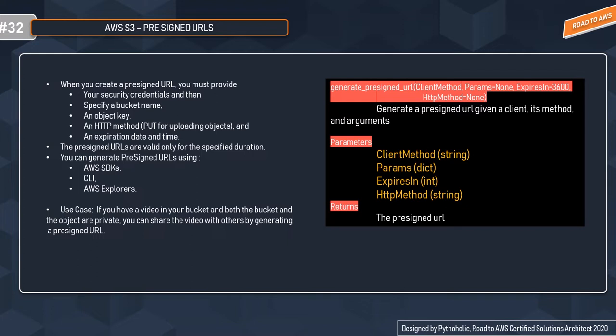For example, if you have a video in your bucket and both the bucket and the object are private, you can still share the video with your users by generating a pre-signed URL. Your users don't need permissions to access the bucket — they can use the pre-signed URL to watch the video. The API here is `generate_presigned_url`, which takes arguments like client method, parameters, expires_in, and HTTP method.